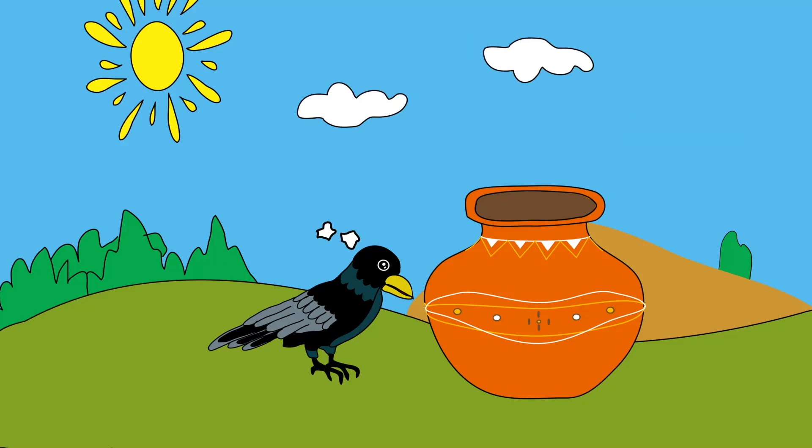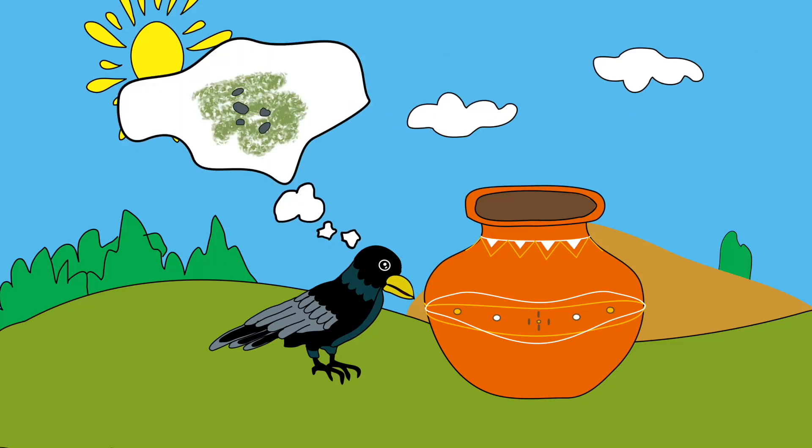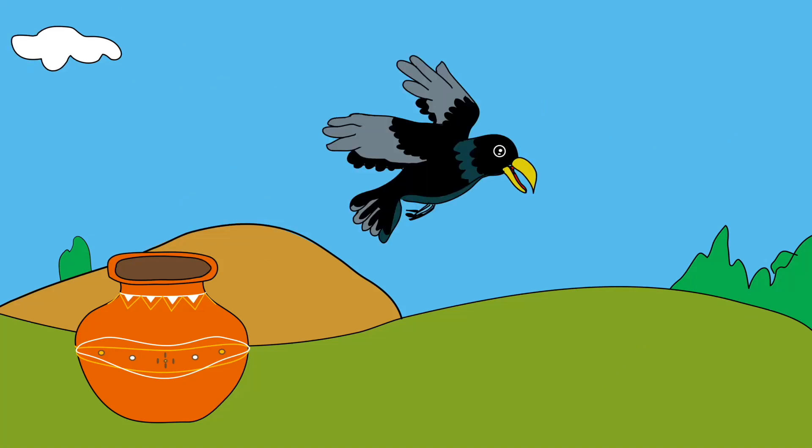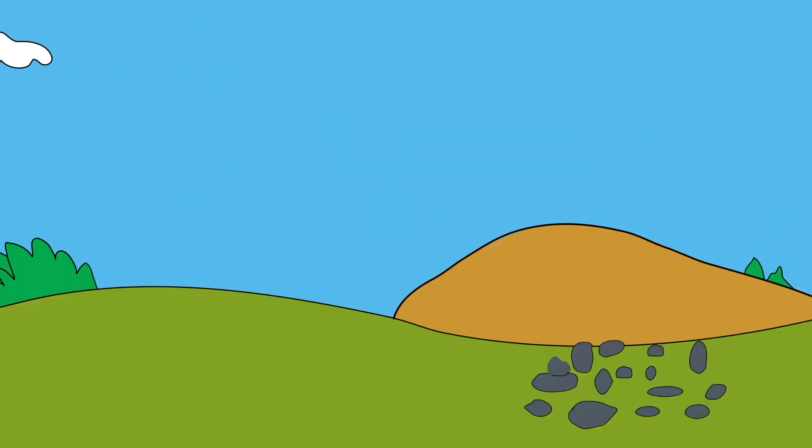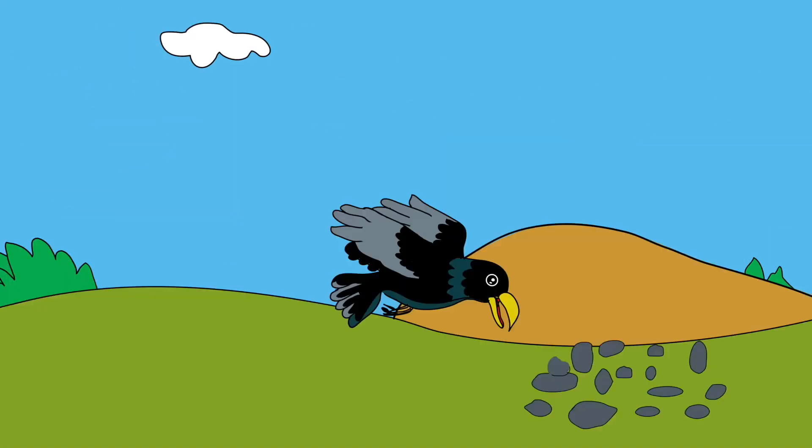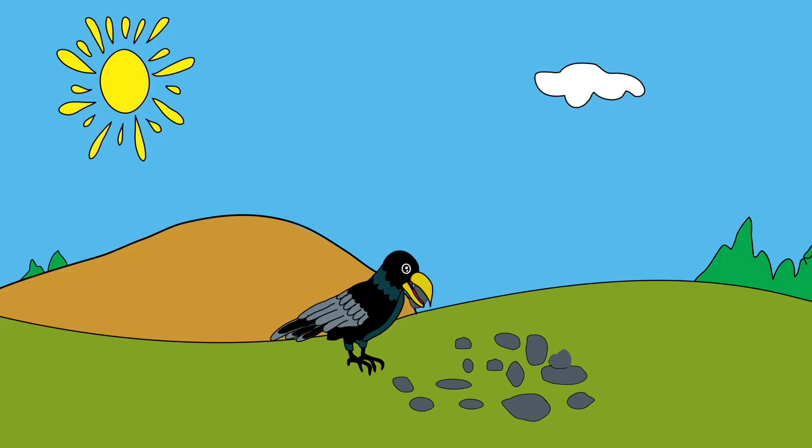The clever crow didn't give up. He thought for a moment and then had a bright idea. He began picking up small pebbles one by one and dropping them into the pot.